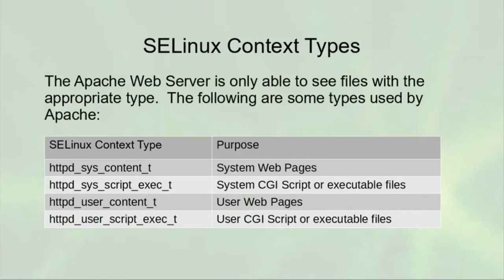When you are creating web pages, there are a couple of SELinux context types you should be aware of. The httpd_sys_content_t type is used for regular system-wide web pages when serving content for your web server. You can also use CGI scripts, and the httpd_sys_script_exec_t type must be set on all CGI scripts, as well as setting execute permissions.